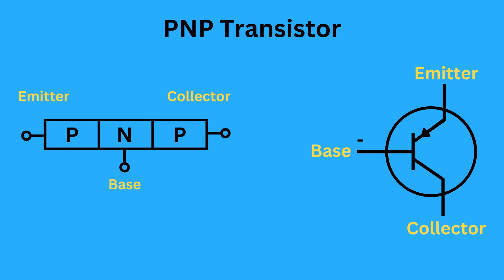In PNP transistors, the layers are arranged as PNP. They consist of two P-type semiconductor materials, separated by a thin layer of N-type material. The current flows from the emitter to the collector when a negative voltage is applied to the base relative to the emitter.